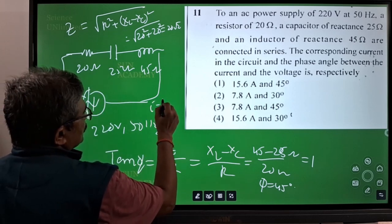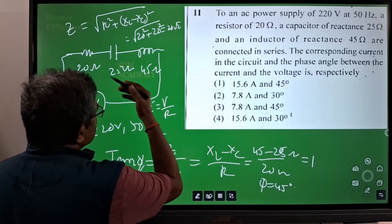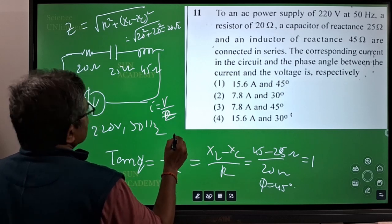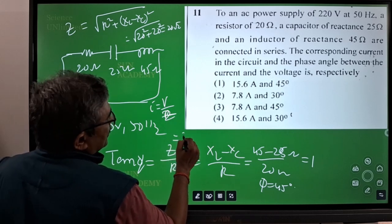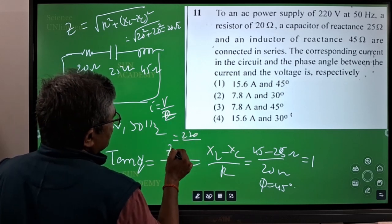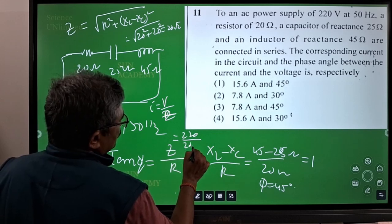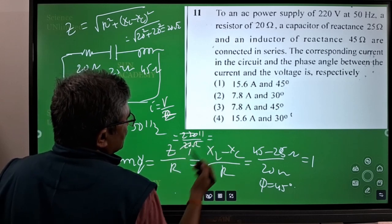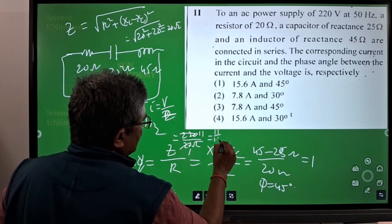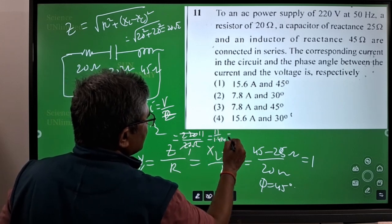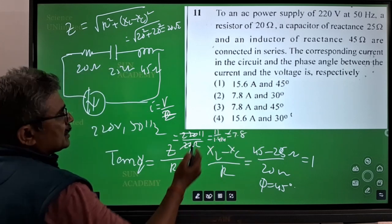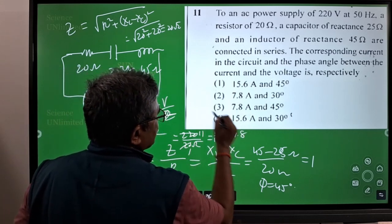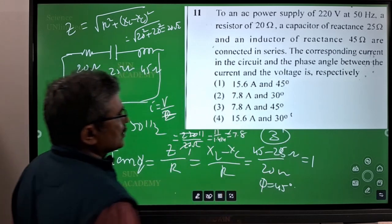Then your I is equal to V by Z. So that is equal to V is 220 by Z is 20 root 2. So 11 by root 2, 11 by root 2 means 11 by 1.414, nearly it will be 7.8. So it is 7.8A. So the answer would be the third one.